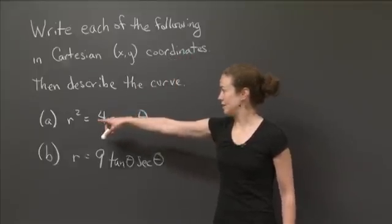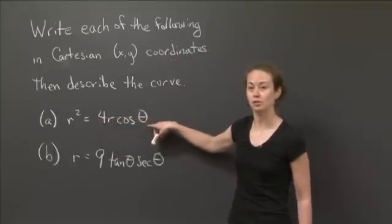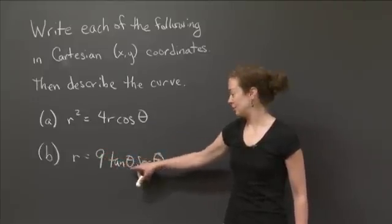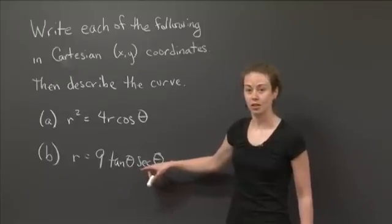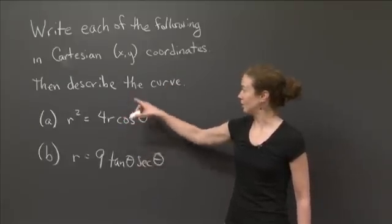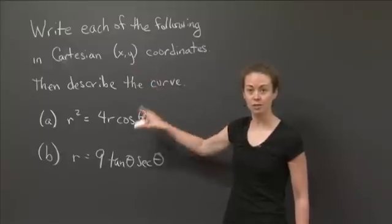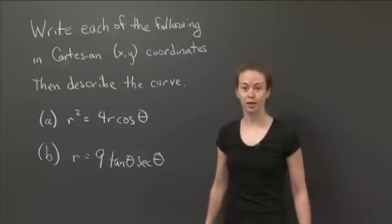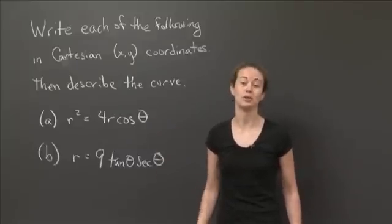So the first one is r² = 4r cos θ. And the second one is r = 9 tan θ sec θ. So again, what I'd like you to do is convert each of these to something in the Cartesian coordinates, in the x, y coordinates, and then I want you to describe what the curve actually looks like. So I'll give you a little while to work on it, and then when I come back, I'll show you how I do it.